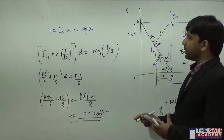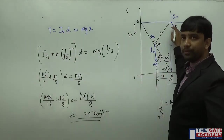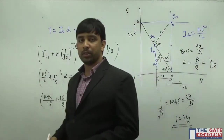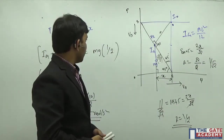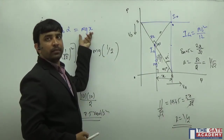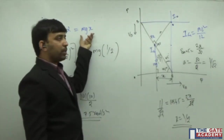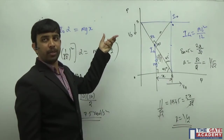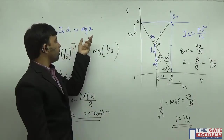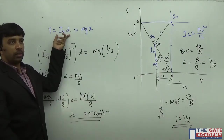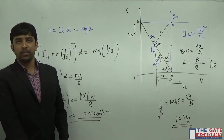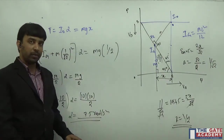At this instant, the rod is rotating about point O. The couple causing the rod to rotate is due to gravity. This is the torque acting on the rod, making it rotate about point O. About point O, I·alpha equals the torque acting on the rod. Using this equation, you get the value of alpha as 7.5 radians per second squared.